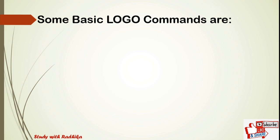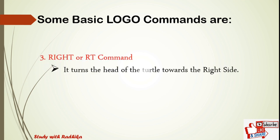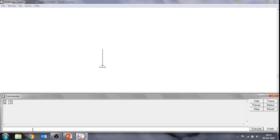The third basic command is the right command or rt command. It is not possible to draw all figures with forward and backward commands only. Sometimes we require to move the turtle towards right and left directions also. To turn the turtle in the right direction, we use the right command. When we use the right command, we have to specify the angle by which the turtle should turn. For example, type rt 90 in the input box and press Enter. The turtle will turn 90 degrees in the right direction.